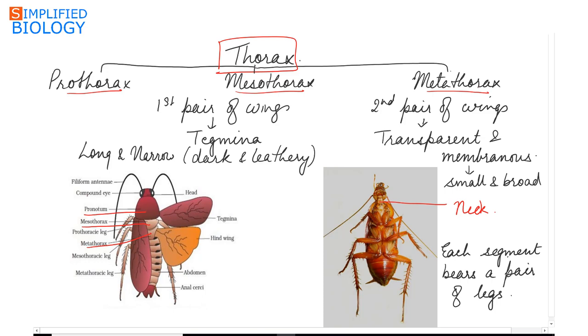Each segment of the thorax bears a pair of legs. This is in the prothorax, metathorax, and mesothorax. The first pair of wings lie in the mesothorax. Now these are the first pair of wings that lie in the mesothorax. They are referred as tegmina.